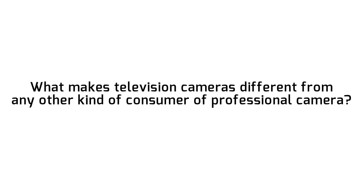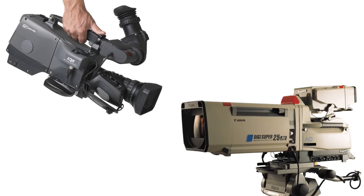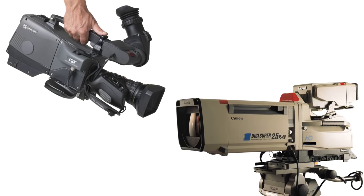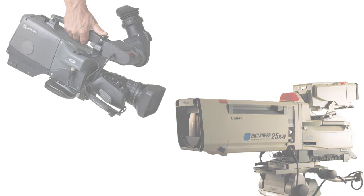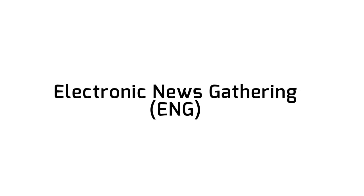So what makes a television camera different from any other kind of consumer or professional camera? The difference becomes a lot clearer when you understand the nature of television productions, although cameras used for television differ greatly just among themselves. Which equipment is used and how its setup depends on the type of work. For television, the most common forms are field, studio, electronic field production, and electronic news gathering.